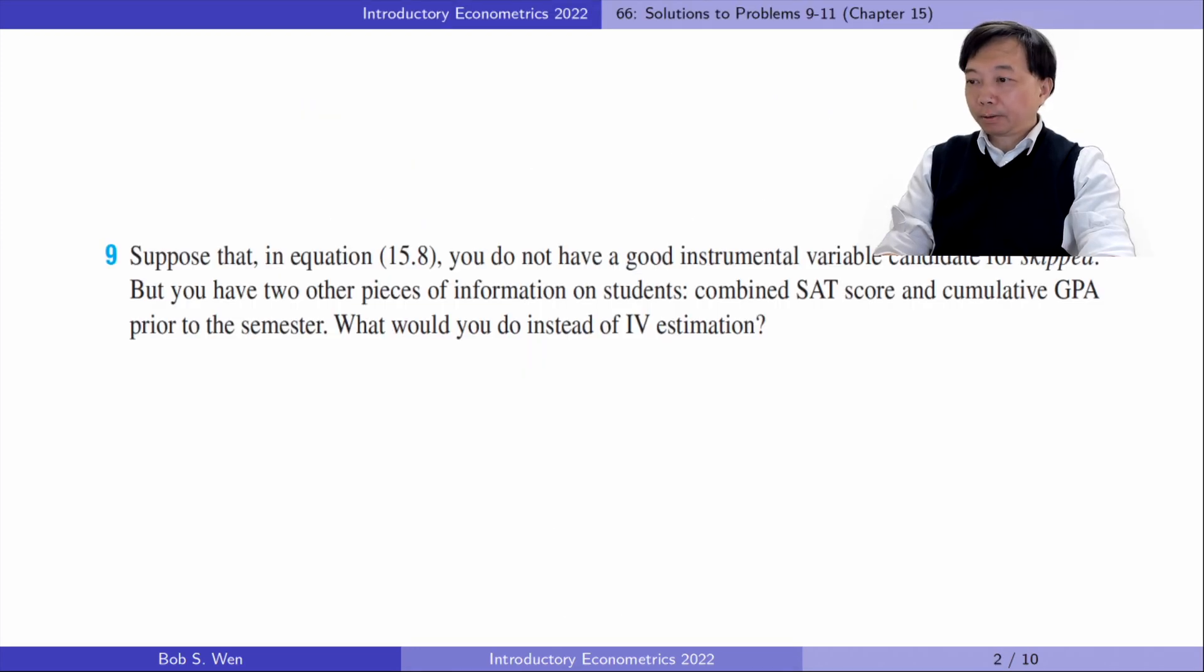For problem 9, suppose that in equation 15.8, we do not have a good instrumental variable candidate for skipped, but we have two other pieces of information on students: combined SAT score and cumulative GPA prior to the semester. What would you do instead of IV estimation?